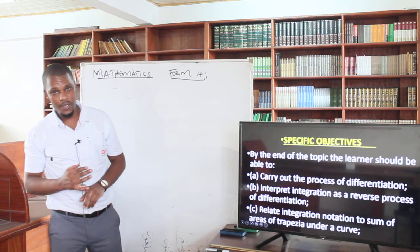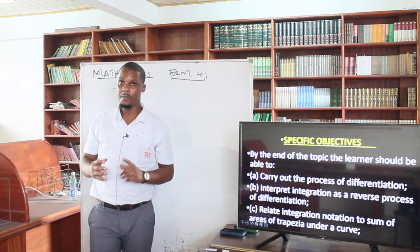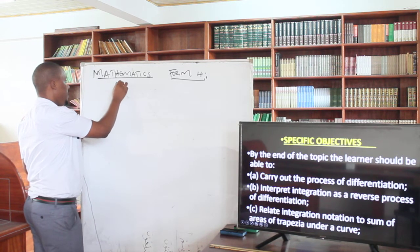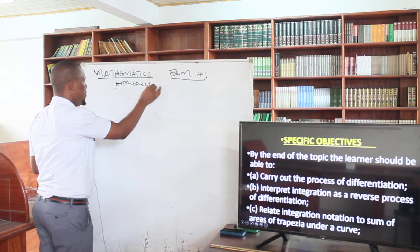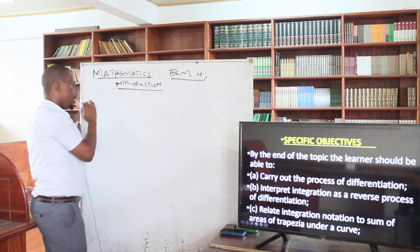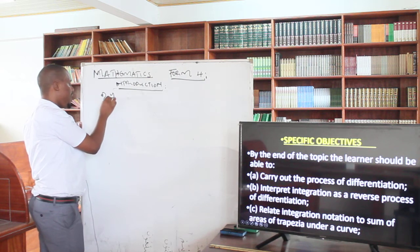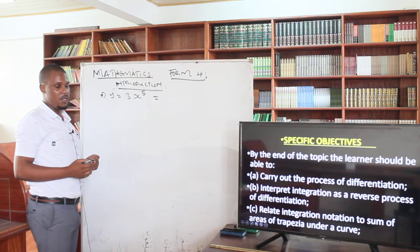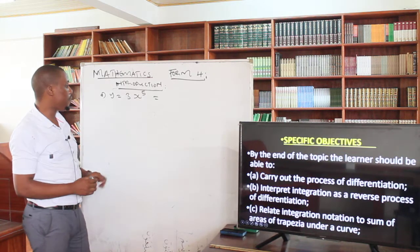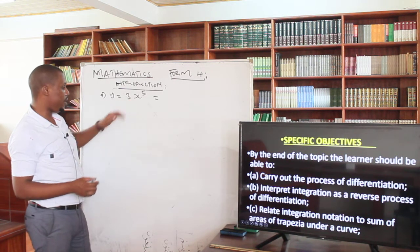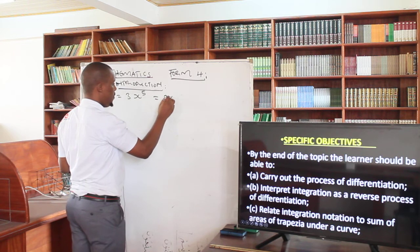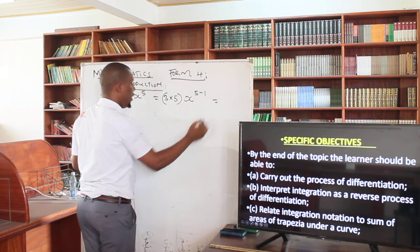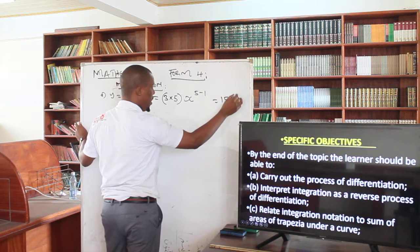Number one: you must be in a position to carry out the process of differentiation. In this introduction, the process of differentiation — if you have been given a function, say y equals 3x to the power 5, we understand the process. You take the power, multiply it by the coefficient: 3 multiplied by 5. Then reduce the power by 1, giving x to the power 5 minus 1. At the end of the day, you get 15x to the power 4.